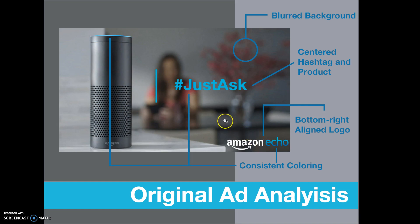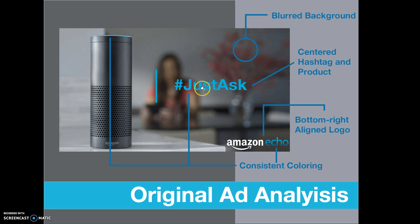The alignment is center-aligned for the main message and then bottom-right aligned for the logo. Coloring is very consistent — we've got this light blue here on the bar, light blue in the text, and even light blue in the light emanating from the product itself.